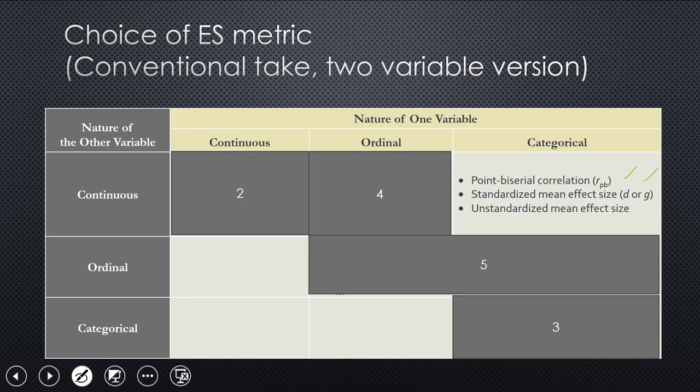It's a standardized effect size. It could be D or G, whether it's corrected or not. We'll talk about that. You could have an unstandardized mean effect size over here. All of those are categorical between groups comparisons with a continuous outcome.